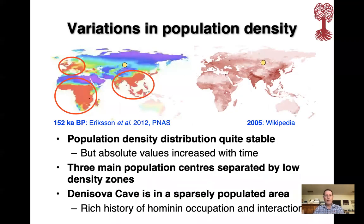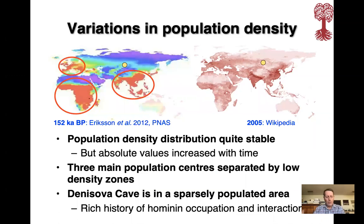Population density has always varied. I show the situation 150,000 years ago and just recently from Wikipedia — you can see that the density distribution is quite stable, but of course the absolute values have increased with time. In the old world we have three main population centers separated by low population density areas.